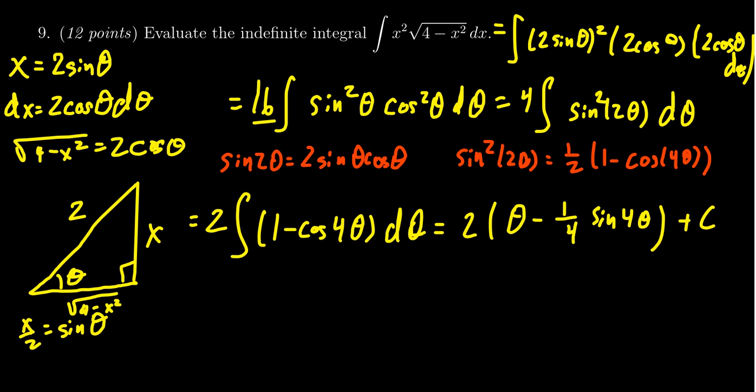For which now I have to start translating these things back in terms of theta somehow or another. Now, with the sine four theta, we're going to use this identity again. So what we get there, I'll distribute that two through. So you're going to get two theta minus one half. But then sine of four theta is the same thing as two times sine of two theta cosine of two theta plus a constant.